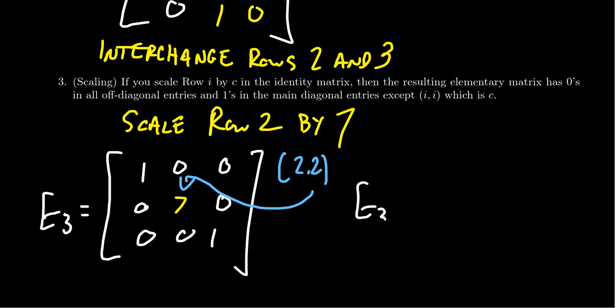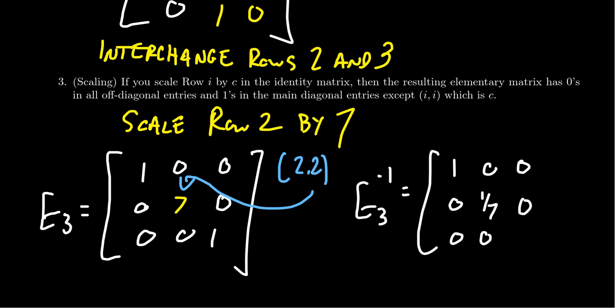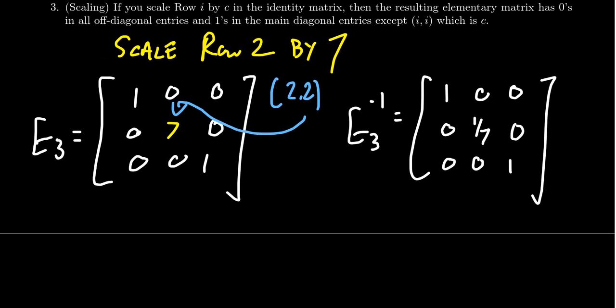The inverse of the scaling matrix — since it is also non-singular — is obtained by taking the reciprocal in the scaled position. So if the 2,2 entry was 7, the inverse has 1/7 in the 2,2 position.